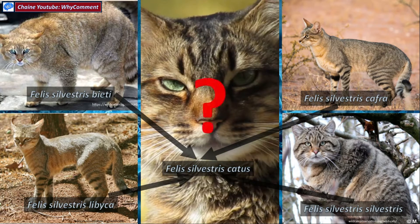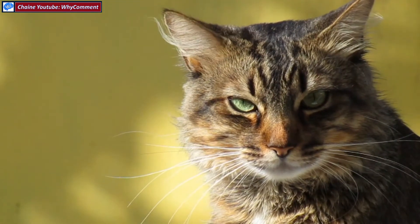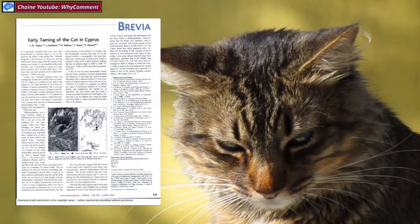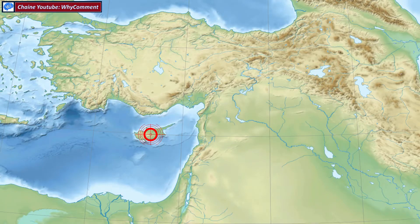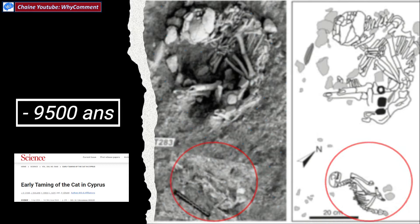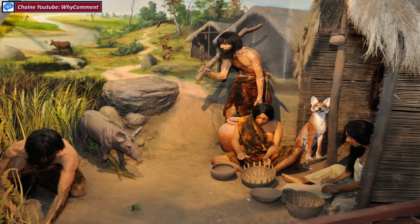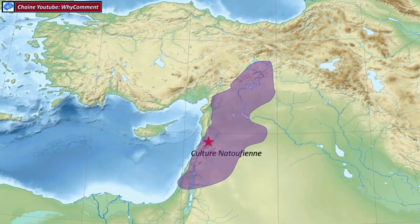Laquelle de ces quatre sous-espèces sauvages a été apprivoisée pour donner le chat domestique ? Comment s'est déroulé le processus de domestication ? Un article publié dans la revue Science en mai 2004 relate la découverte archéologique du plus ancien chat domestique à ce jour. À l'île de Chypre, dans une tombe datée de 9500 ans, un chat de 8 ans a été enterré à quelques centimètres du corps d'un homme de 30 ans. Cette découverte montre que l'homme a au moins en partie domestiqué ses animaux depuis presque 10 000 ans.